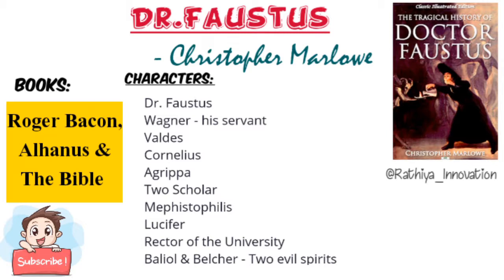Valdes and Cornelius are black magicians, and Faustus wants to get advice from them. They are well-versed in magic, and Faustus thinks their advice would be of great help to him. In this very first scene, the good angel and the evil angel appear in front of Doctor Faustus. The good angel advises Faustus to put aside black magic, warning that it would only bring the wrath of God, and tells him to study religious books like the Holy Bible instead.